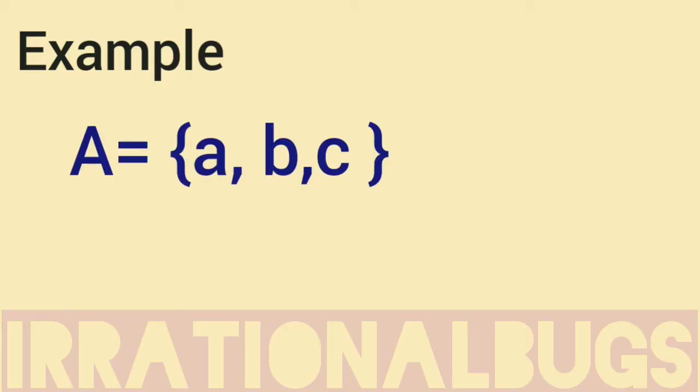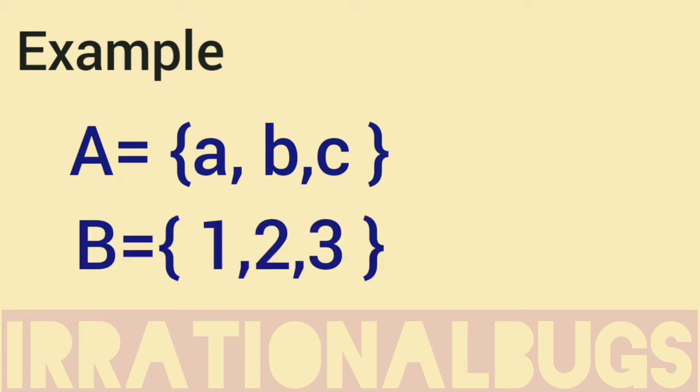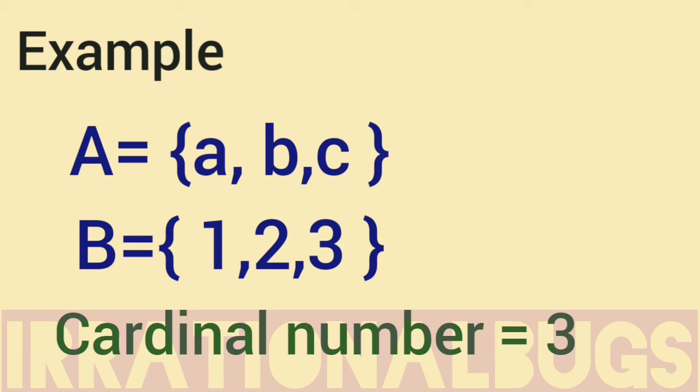Let's understand with an example. Taking two sets. First is A. Elements are A, B, C. How many elements? Three elements. Taking another set B. Elements are 1, 2, 3. Again, how many elements? Three elements. So, cardinal number of A is 3, cardinal number of B is again 3. When both have same cardinal number, then the sets are equivalent.